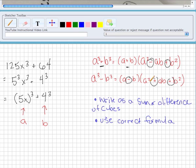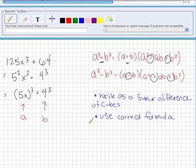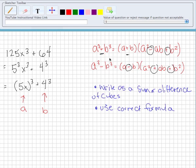And again, it's AB, A squared, AB, B squared. So since we have a sum of cubes, A cubed plus B cubed, we're going to go ahead and utilize this formula up here.